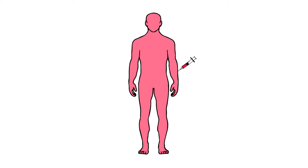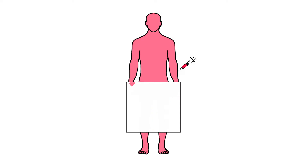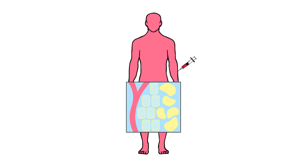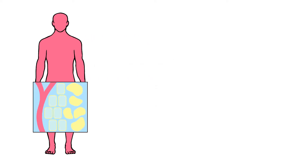However, the body isn't one big compartment. It consists of several types of compartments, like the blood, the intracellular fluid, the extracellular fluid, body fat, etc. So drug distribution is generally uneven, depending on certain drug characteristics.